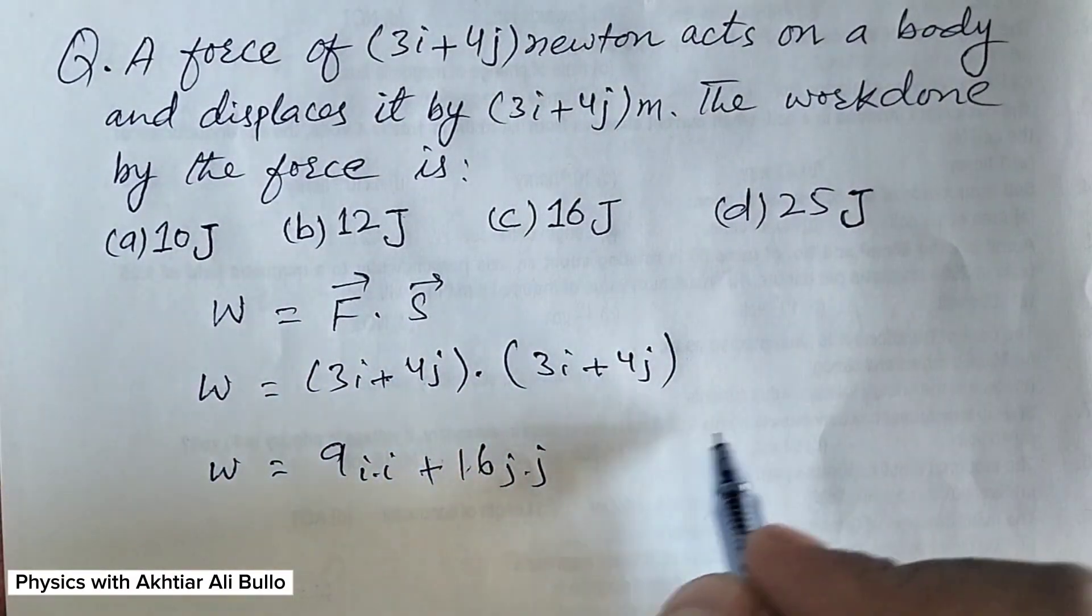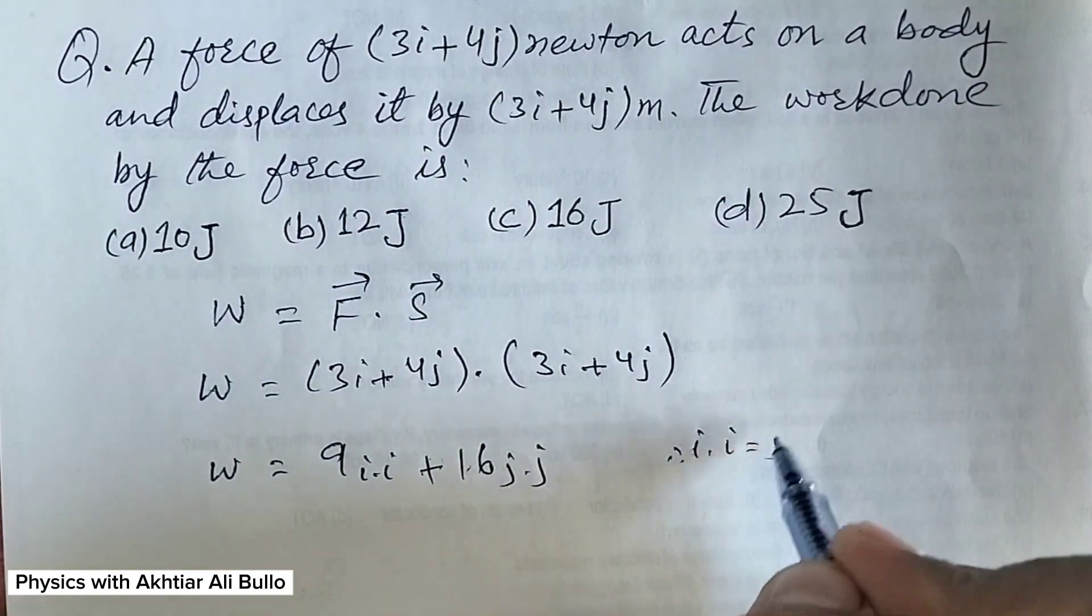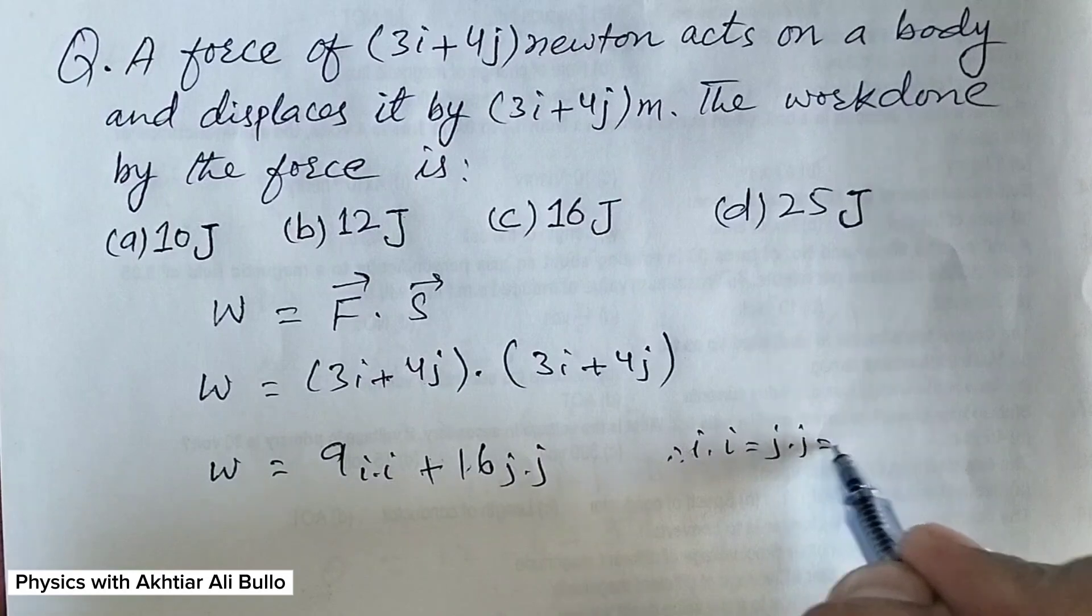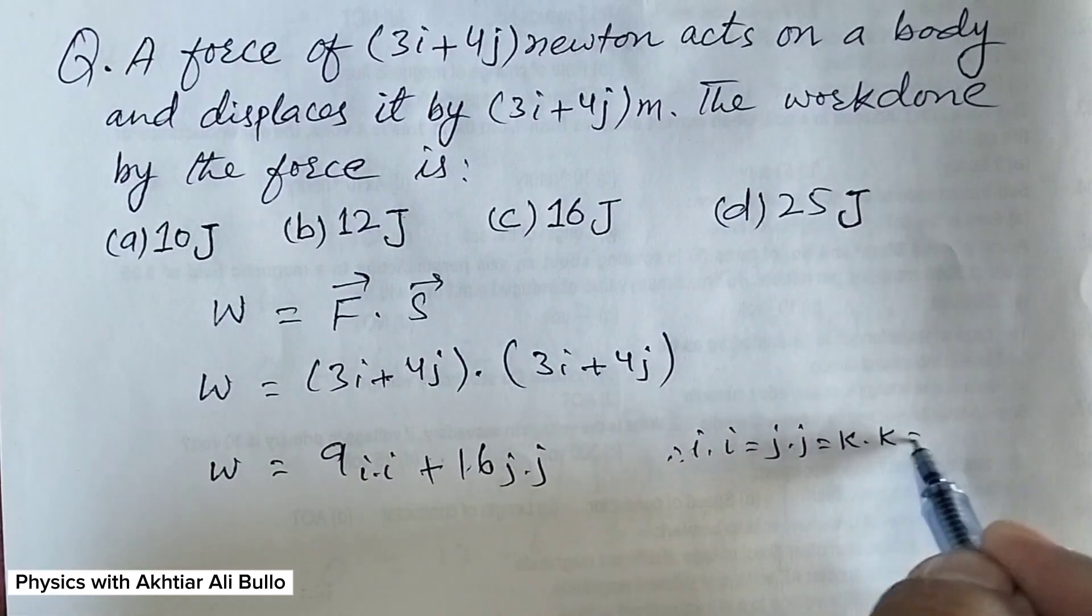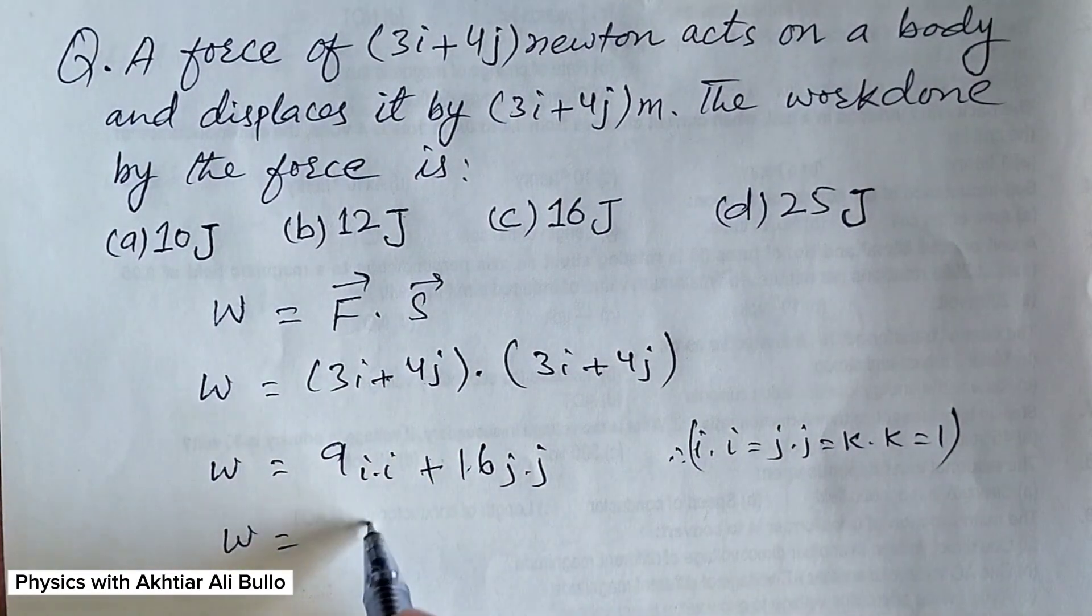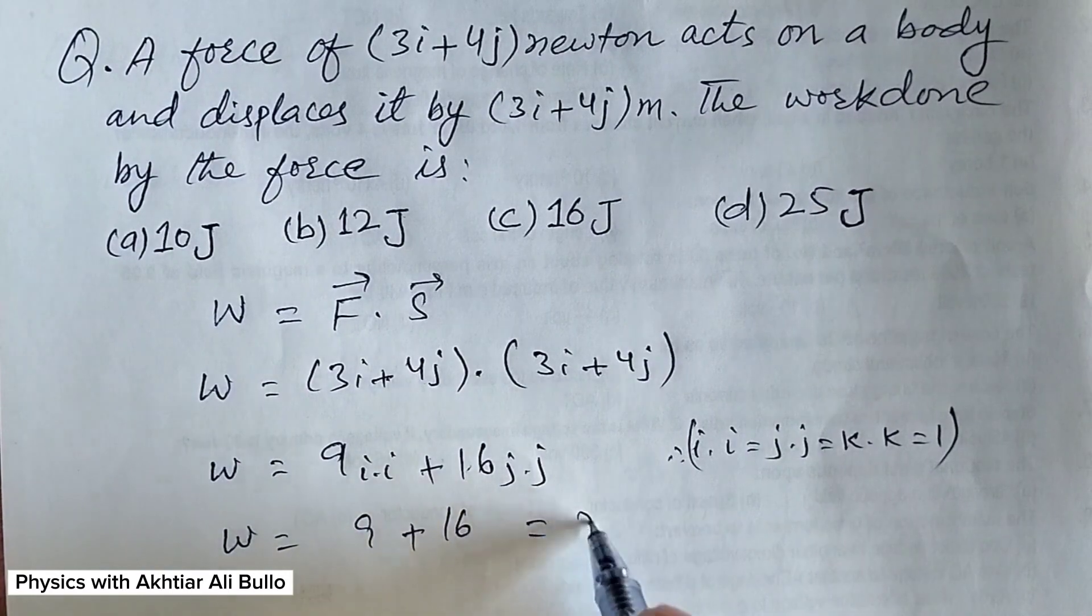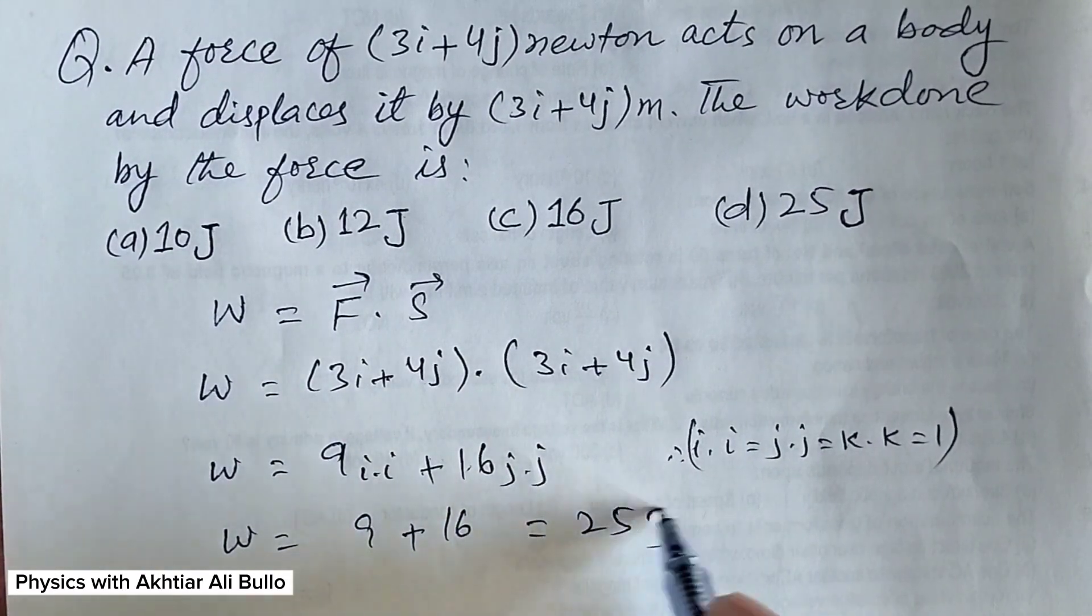As we know that i dot i is equal to j dot j is equal to k dot k is equal to 1. So work done will be equal to 9 plus 16 which is equal to 25 joule.